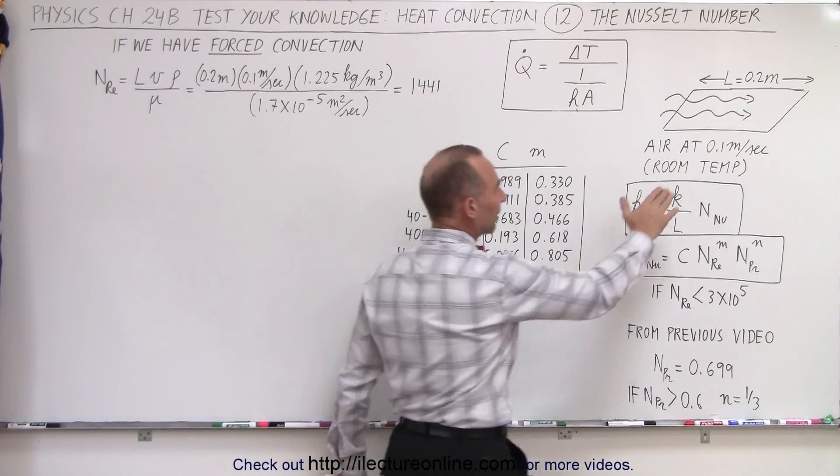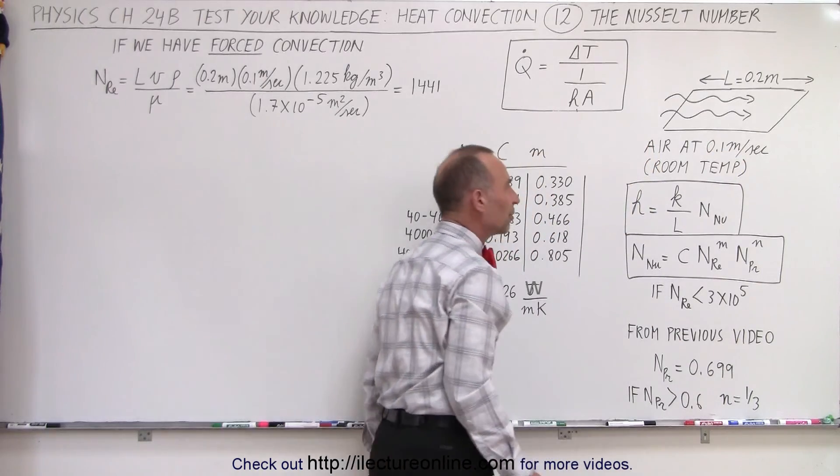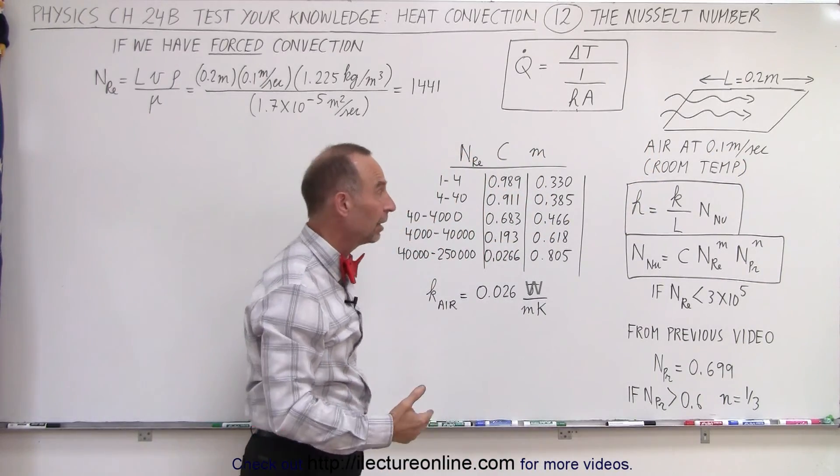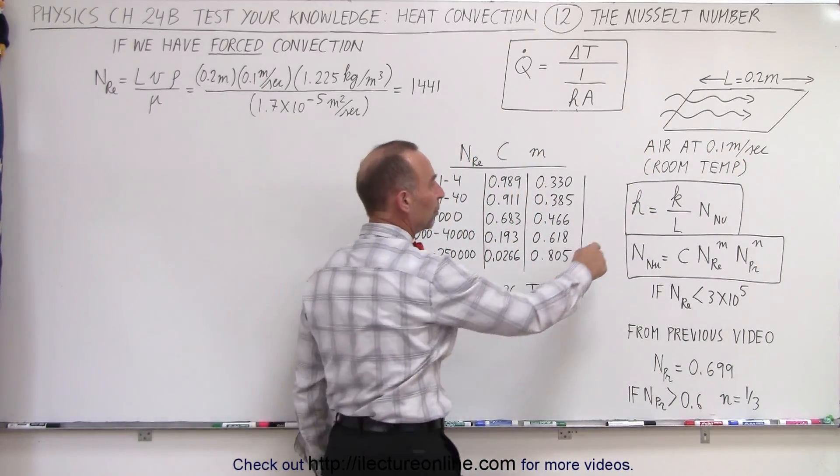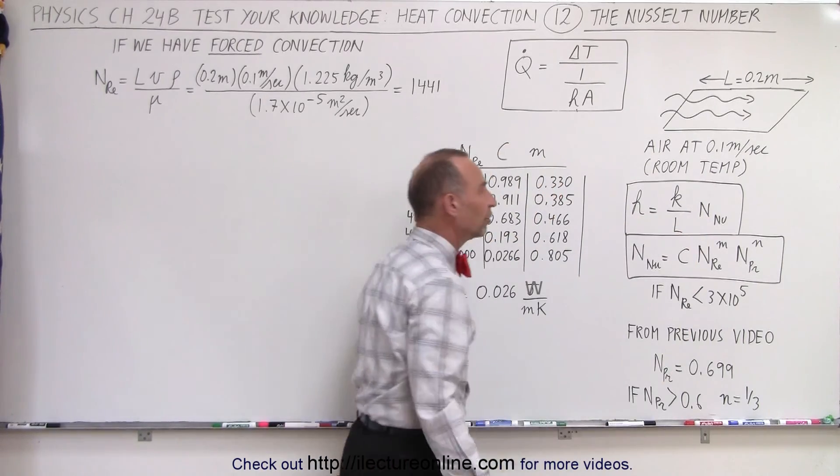So let's say we have an object that has a length of 0.2 meters. We're blowing air across it at a speed of 0.1 meter per second at room temperature. And so we're going to try to determine the transfer coefficient. And of course to do that we have to find the Nusselt number.